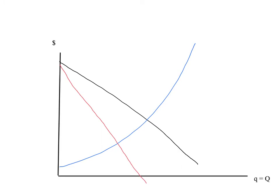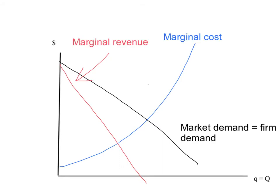Let's label each of these. The red line is our marginal revenue curve. The blue line is the upward sloping marginal cost curve. The black downward sloping line is simply our market demand. And remember, for a monopolist, that's also equal to the firm demand, because the monopoly is the only supplier in the market.